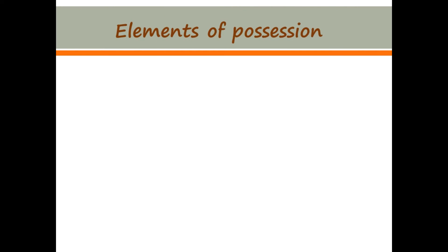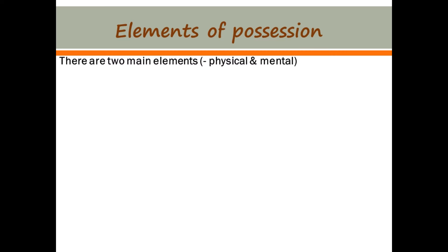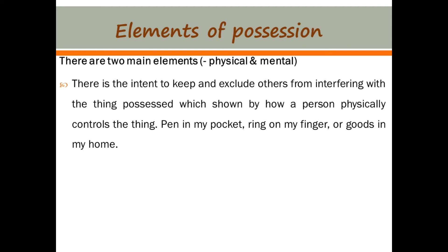Let us look at the elements of possession. There are two main elements: the physical and the mental elements of possession. There is the intent to keep and exclude others from interfering with the thing possessed, which is shown by how a person physically controls the thing — for instance, a pen in my pocket, a ring on my finger, or goods in my home.